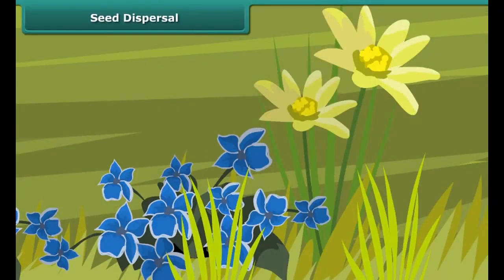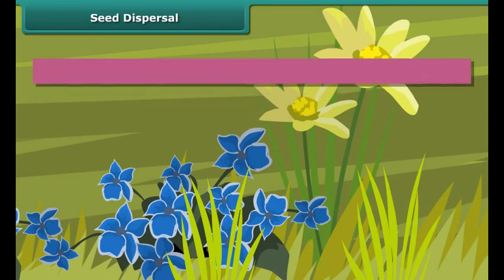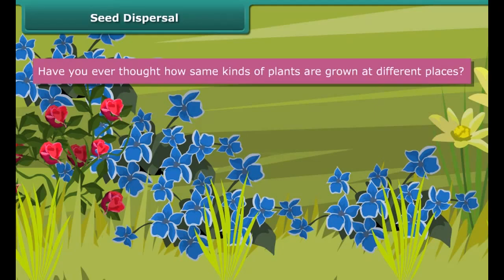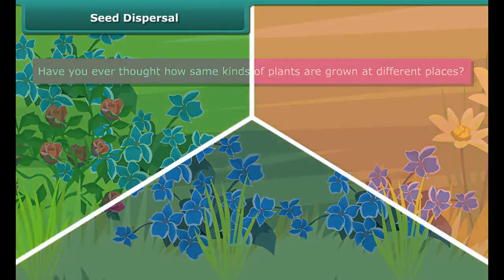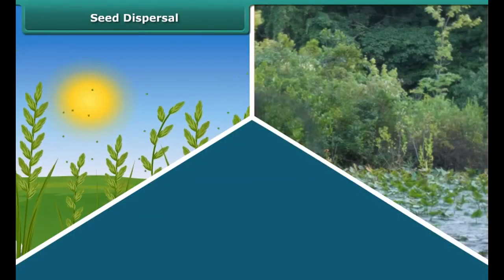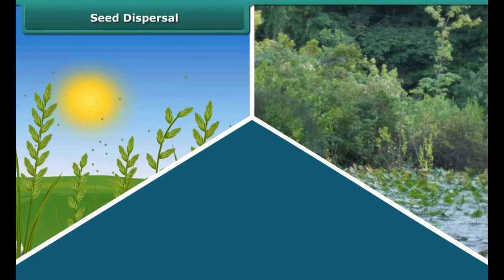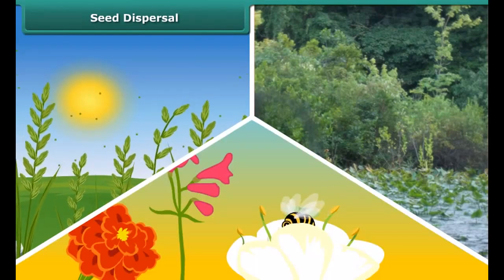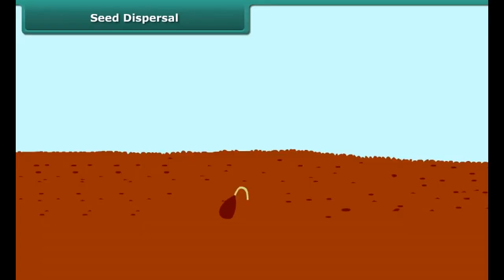Fertilization. When male and female gametes are fused together, a new cell is produced which is called a zygote. This process is called fertilization. After fertilization, the ovary changes into fruit and the ovules develop into seeds. The seed contains an embryo enclosed in a protective seed coat. The fruit may be either fleshy or dry.